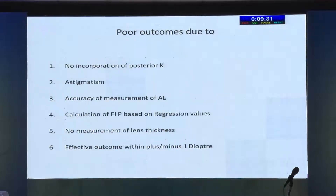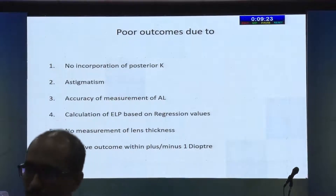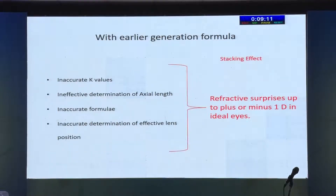What did we not do right? We did not look at the proper K. We did not look at the posterior cornea. Astigmatism was not taken into measurement. Axial length was not very accurate. The calculation was based on ELP regression values with no measurement of lens thickness, and effective outcome never went beyond plus or minus 1 diopter. So we have a stacking effect — small errors in keratometry, small errors in axial length, and the regression formula itself compounded those errors.